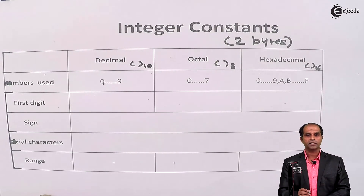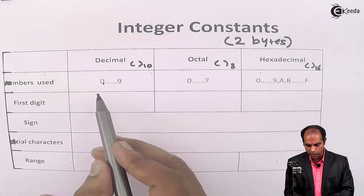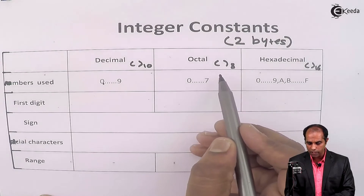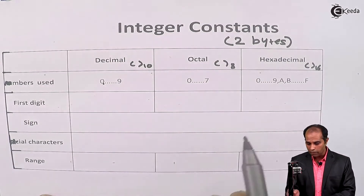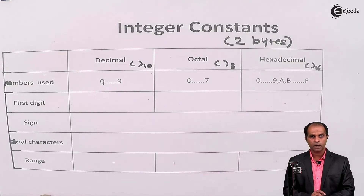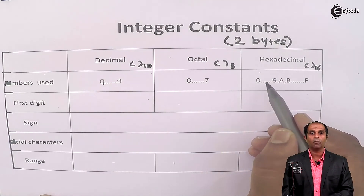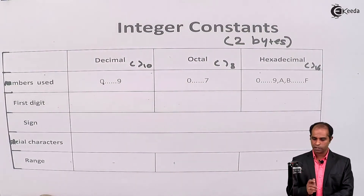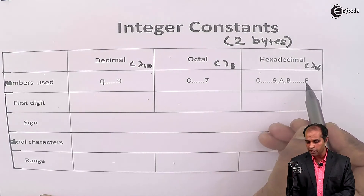The base indicates how many unique digits the system can use. Decimal base 10 has 10 unique digits. Octal base 8 has 8 unique digits — count 0 to 7. Hexadecimal base 16 needs 16 unique digits: 0 to 9 gives 10, so we extend with alphabets A, B, C, D, E, and F.